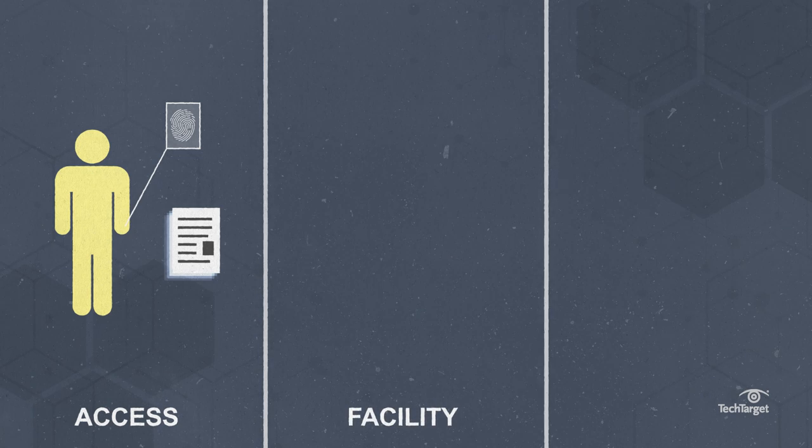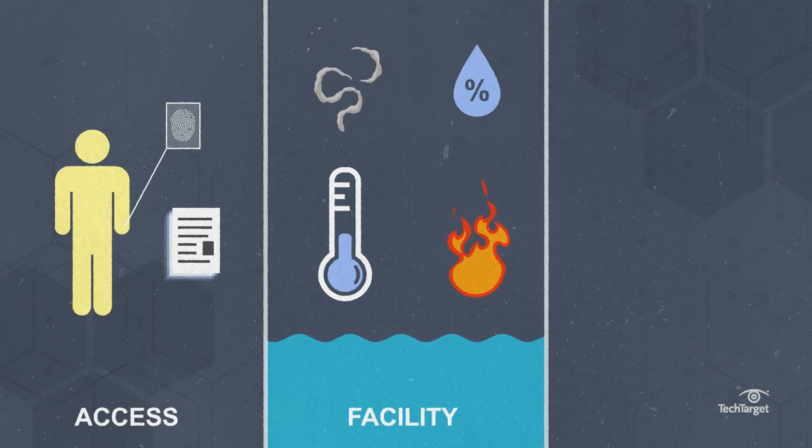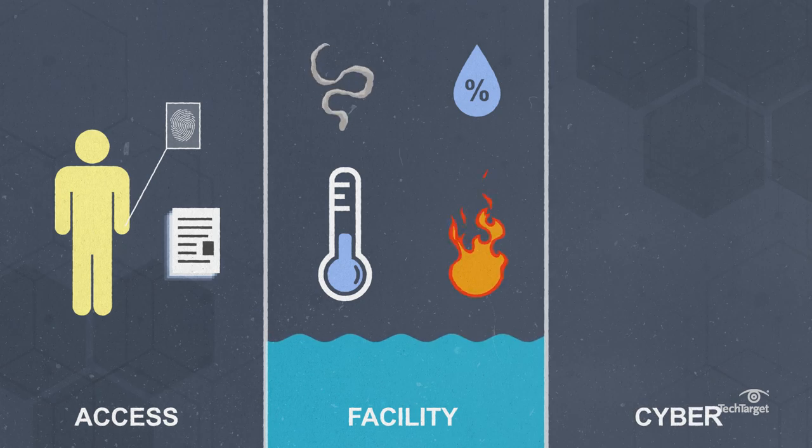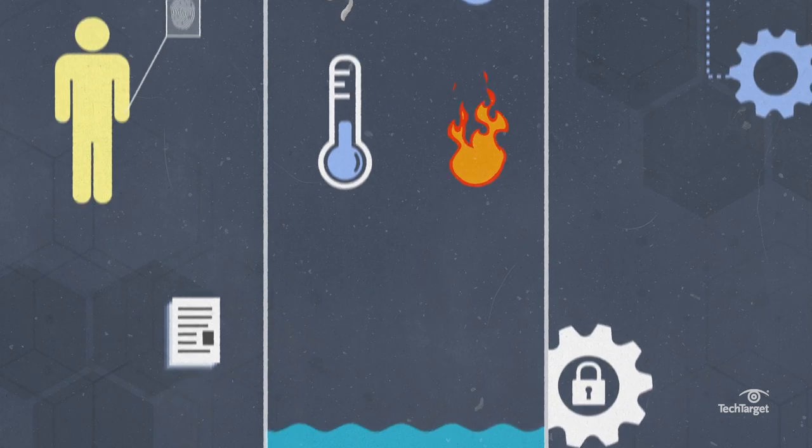Facility security, like making sure the data center is secure against environmental temperature, humidity, and smoke, fire, or flood conditions. And cyber security, aka controlling access to data and applications hosted within the IT infrastructure.